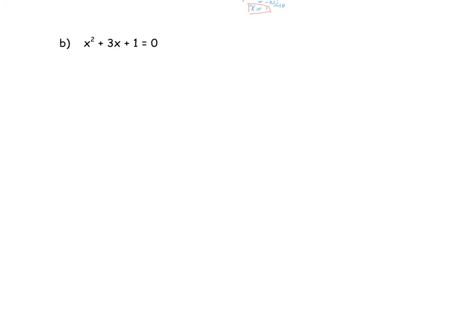Here's a second example. I want you to give this a try on your own — work up to the point where you've substituted all values into the quadratic formula, then stop. When I look at this, the coefficient of the squared term is 1, so a = 1; the coefficient of the linear term is 3, so b = 3; and the constant term is 1, so c = 1.